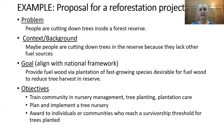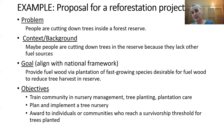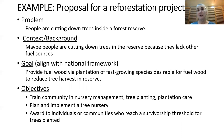Here's an example. Back to that reforestation project proposal: the problem is people are cutting down trees inside a forest reserve; the context is people are cutting down trees because they lack other fuel sources. The goal — aligned with the national framework — is to provide a plantation of fast-growing trees desirable for fuelwood, and to reduce tree harvest in the reserve. Objectives might include: training the community in tree nursery management, tree planting, and plantation care; planning and implementing a tree nursery; and awarding individuals or communities who reach a certain level of tree survivorship to motivate them to care for the trees they plant.